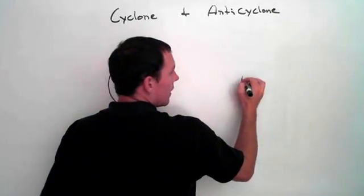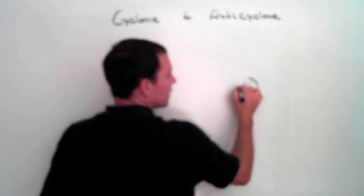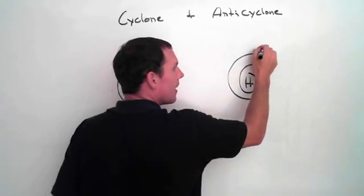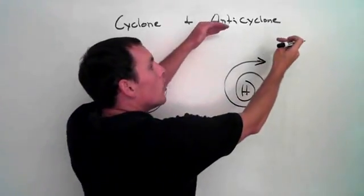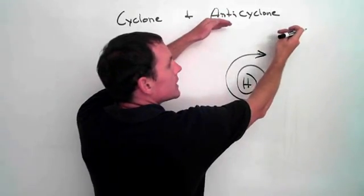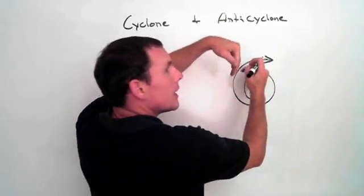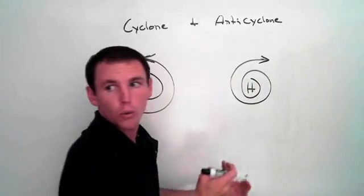Anticyclone. High pressure. Clockwise rotation. Cold, dense air falling from aloft, warming, increasing its capacity to hold moisture.